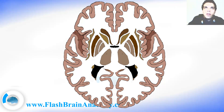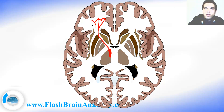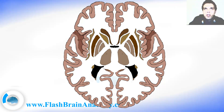The anterior part of the internal capsule contains the frontopontine fibers that project from the frontal cortex to the pons. It also contains the thalamocortical fibers, which are part of the thalamocortical radiations, connecting the medial and anterior nuclei of the thalamus with the frontal lobe. The genu contains the corticobulbar fibers, which run between the cortex and the brainstem. The posterior part contains the corticospinal fibers, sensory fibers from the body — including the medial lemniscus and the anterolateral system — and a few additional corticobulbar fibers.